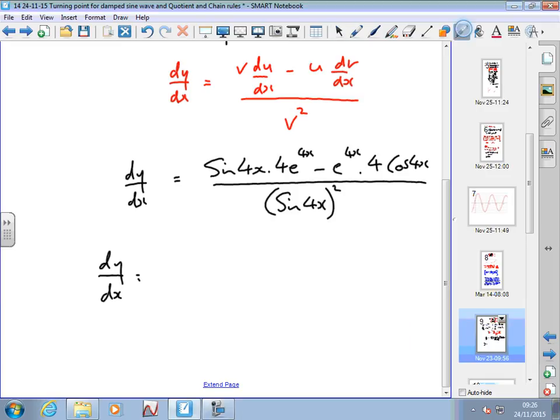Now I'm going to simplify it a bit. I always put trigonometric functions at the end, so there's no confusion. Somebody might think that's the sine of 4x times 4 e to the 4x—that's not what I mean. So I put the 4 e to the 4x at the front. Same here. So what I have is 4 e to the 4x times sine 4x minus 4 e to the 4x cos 4x, all over...